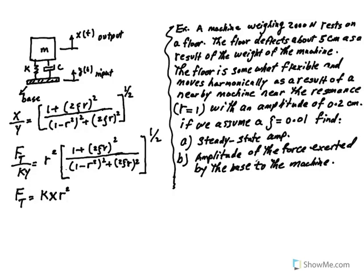Hello guys, I'm here with another video, this time with an example on base excitation, force transmissibility, and the amplitude of the force exerted by the base to the mass. Just a quick summary: we have a typical system of mass, spring, and damper subjected to excitation coming from the base. Y of t is the input, usually in the form of y sine omega_b t, where y is the amplitude of the base and omega_b is the base frequency.